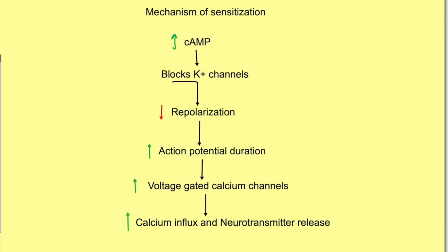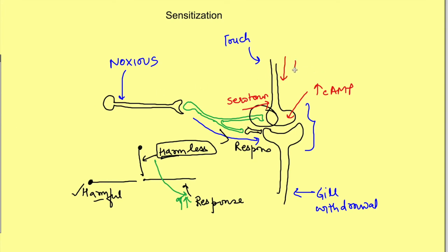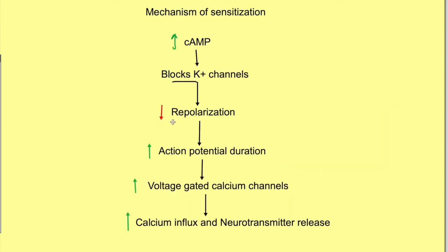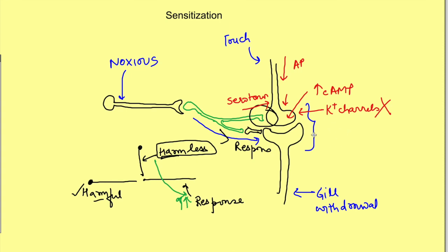The increase in cAMP blocks potassium channels. So when a subsequent touch stimulus is given, an action potential reaches the pre-synaptic terminal, but potassium channels are blocked. This causes delayed repolarization of the action potential, since potassium flux is important for repolarization. The delayed repolarization increases the duration of the action potential, which causes increased opening of voltage-gated calcium channels, increased calcium entry, and hence increased neurotransmitter release by the touch sensory neuron. This leads to greater voltage change on the postsynaptic neuron, more action potential generation, and more response.